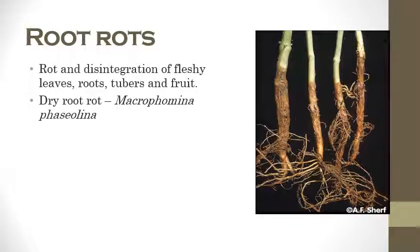The next one is root rots. Here, mainly the disintegration of root regions can be observed when we pull off the roots. If the roots disintegrate, the plant cannot absorb nutrients from the soil, causing fleshy leaves, tubers, and fruits to start to disintegrate as well. The example is dry root rot which is caused by Macrophomina phaseolina — applicable to sunflower root rot, maize root rot, and others.